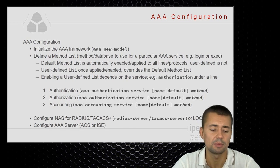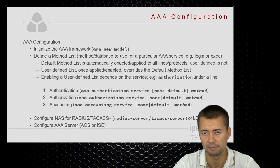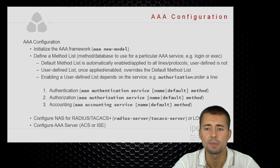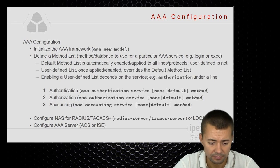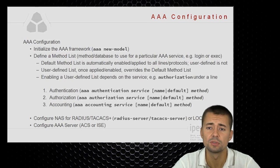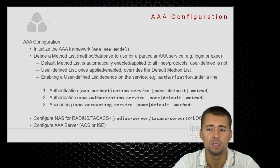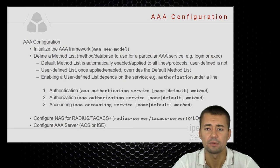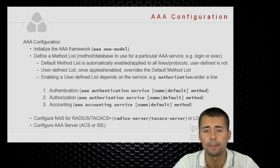The same applies to the authorization method list — as long as the method list is called 'default,' it is going to get automatically applied. With a user-defined method list, when you configure a name other than 'default,' you will have to manually apply it for a particular service for it to take effect.